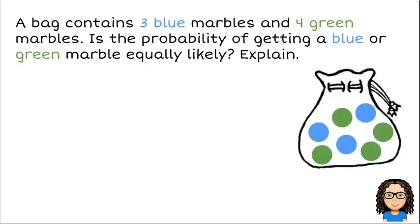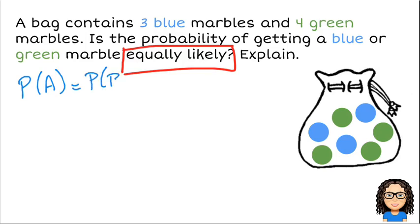Let's have a look at the next question. A bag contains three blue marbles and four green marbles. Is the probability of getting a blue or green marble equally likely? So there's the keywords there. Is it equally likely? So what does that mean to be equally likely? If something is equally likely, then the probability of A is the same as the probability of B.